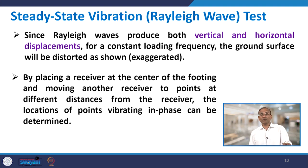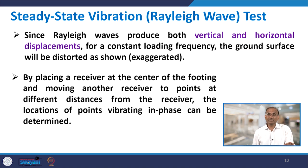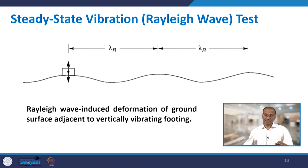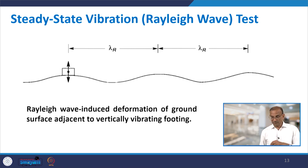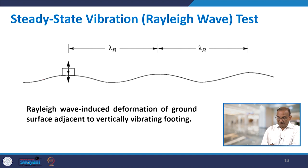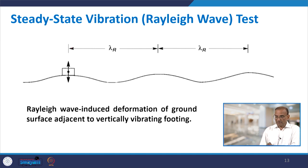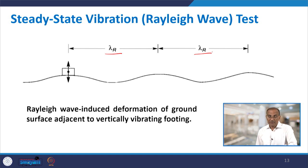The Rayleigh wave produces both vertical and horizontal displacement for a constant loading frequency, and the ground surface is distorted accordingly. Here you have a Rayleigh-wave-induced deformation surface: a source of disturbance, then peak values and down peaks propagating outward. The distance between two peak values is called the wavelength, lambda R.